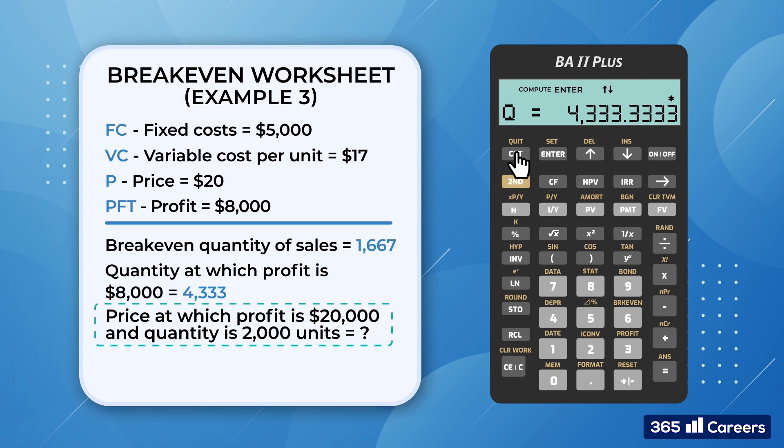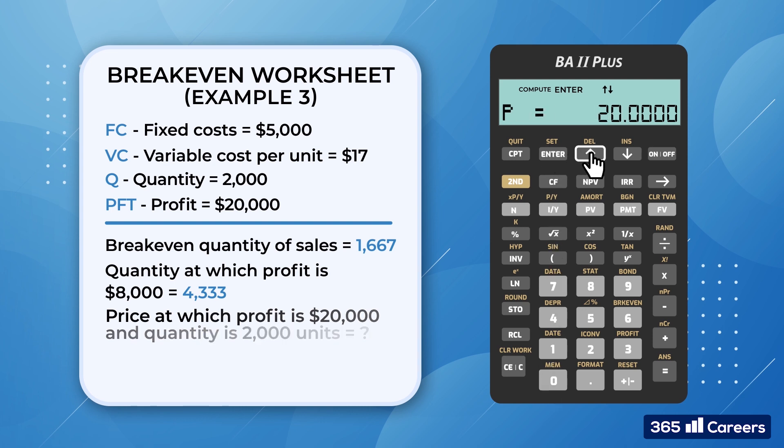Finally, we need to find the sales price at which Company X will realize $20,000 from 2,000 units sold. We enter $20,000 for profit and $2,000 for Q. Then we scroll back and calculate for the price, P. The result is $29.5. Well done!